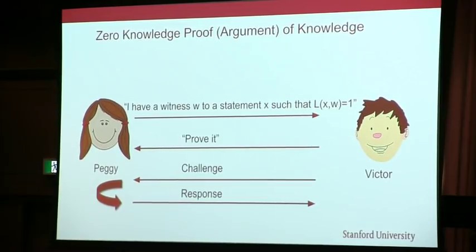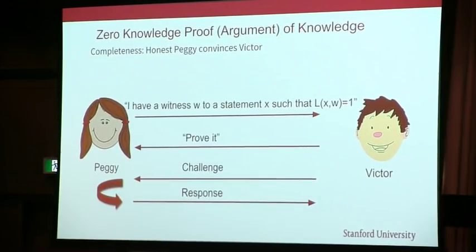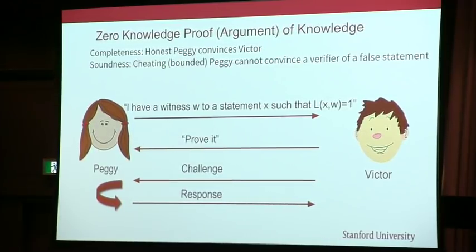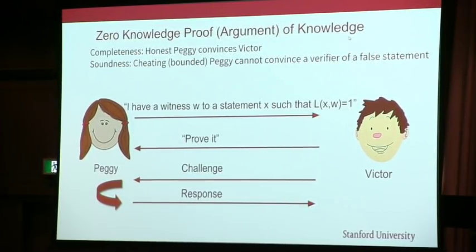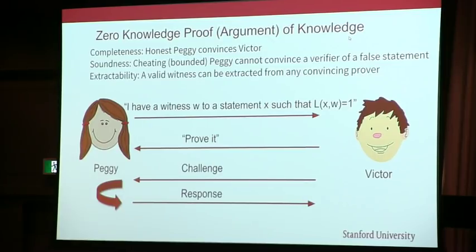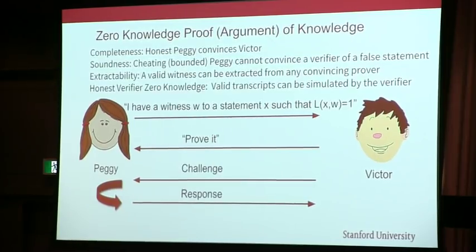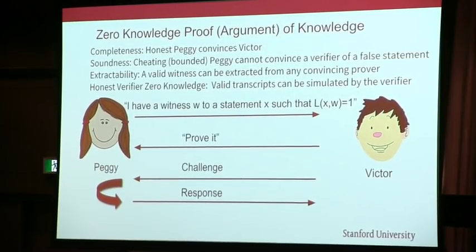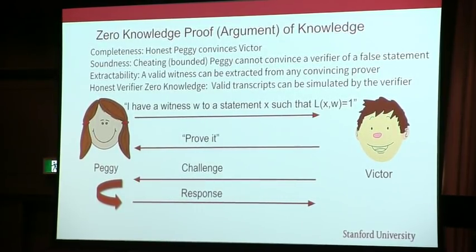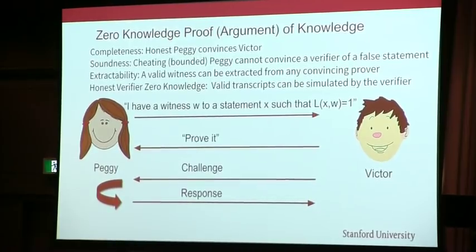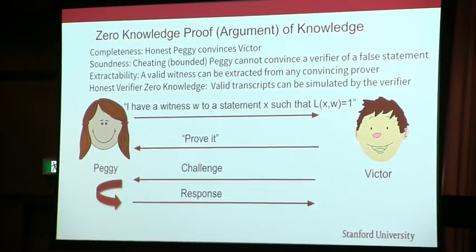This can be done through some interactive protocol. You need to have the property that an honest Peggy can convince a Victor. It's also sound, so Peggy cannot convince Victor if she doesn't actually know the solution. And you have the zero-knowledge property, so every valid transcript can be simulated by the verifier — meaning the verifier doesn't actually learn anything more than the fact that the statement is being proved.